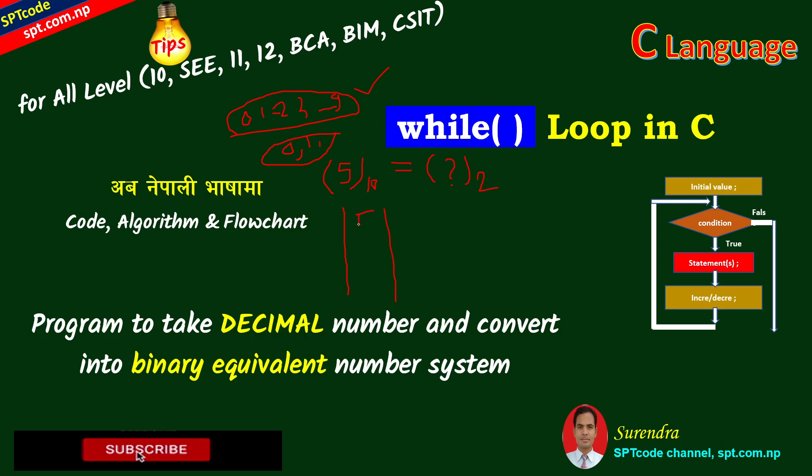We will take remainders one by one. This video will show how we can convert. We will look at the logic. So we will take 5 divided by 2, which is 2 with remainder 1.